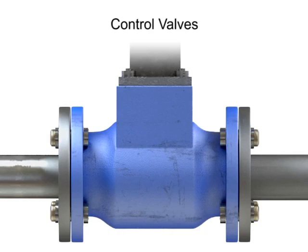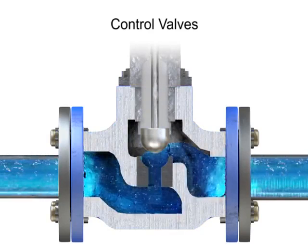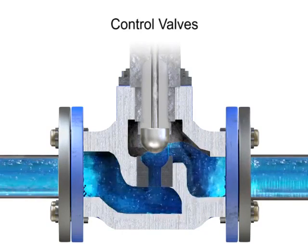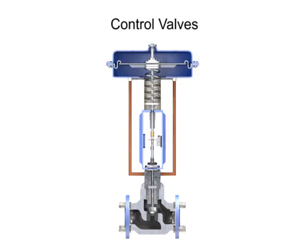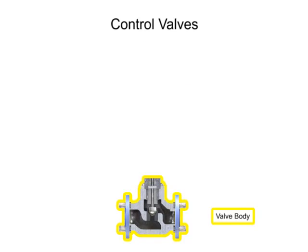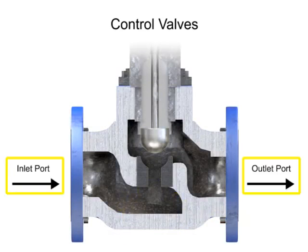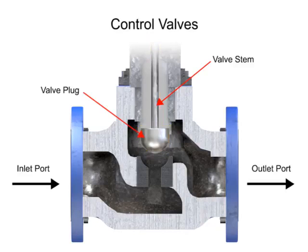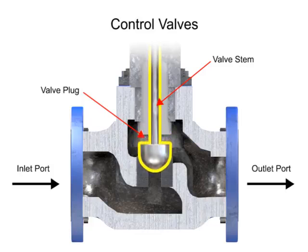Control valve actuators control fluid in a pipe by varying the orifice size through which the fluid flows. Control valves contain two major components: the valve body and the valve actuator. The valve body provides the fluid connections and a movable restrictor, comprised of a valve stem and plug that is in contact with the fluid and varies the flow. The valve actuator is the component that physically moves the restrictor to vary the fluid flow.